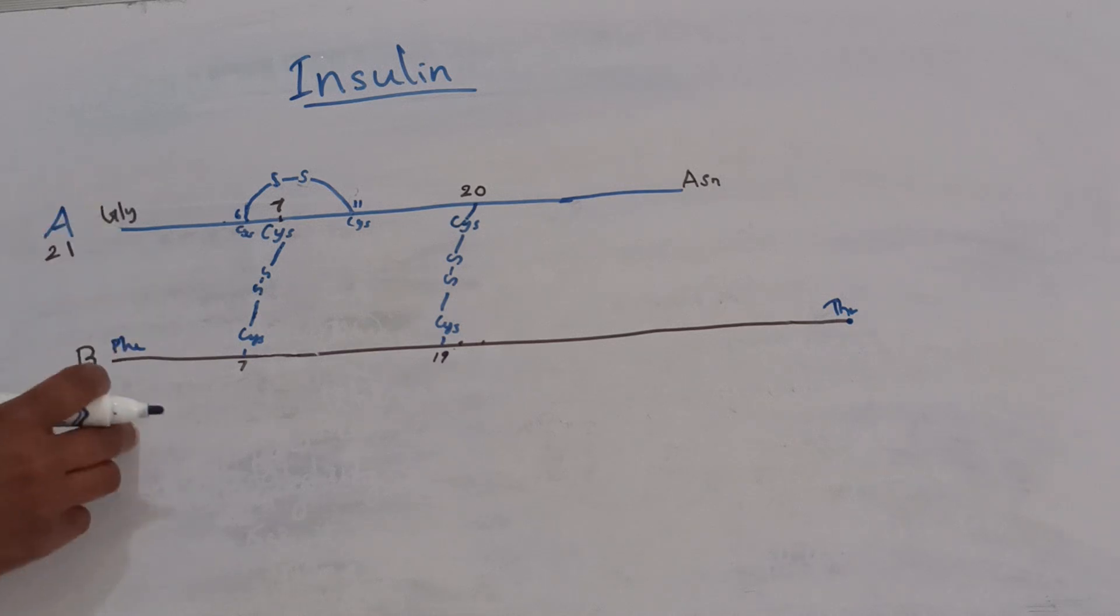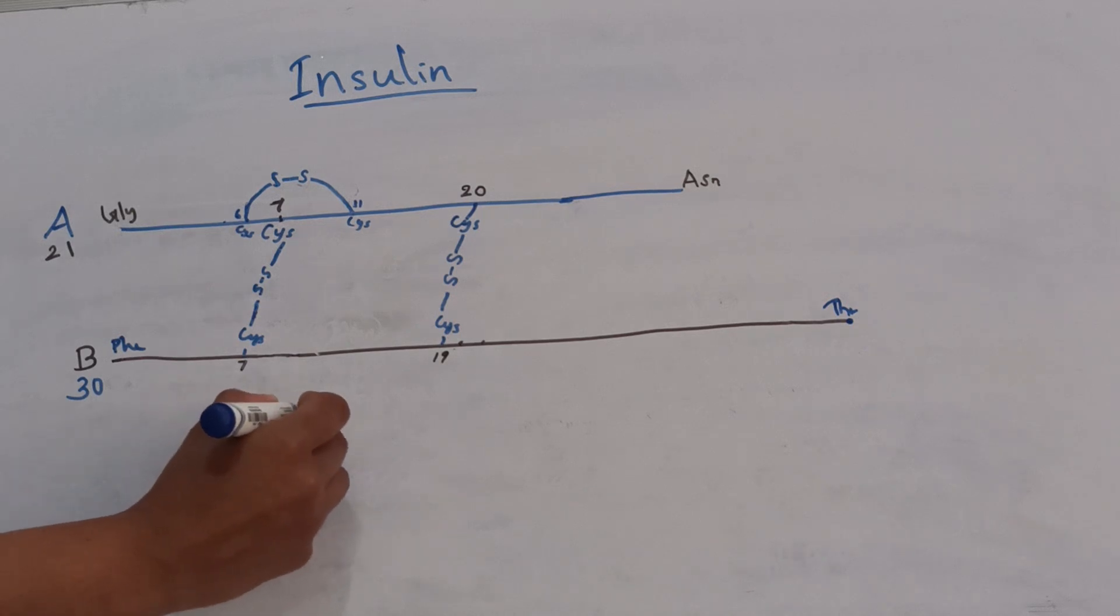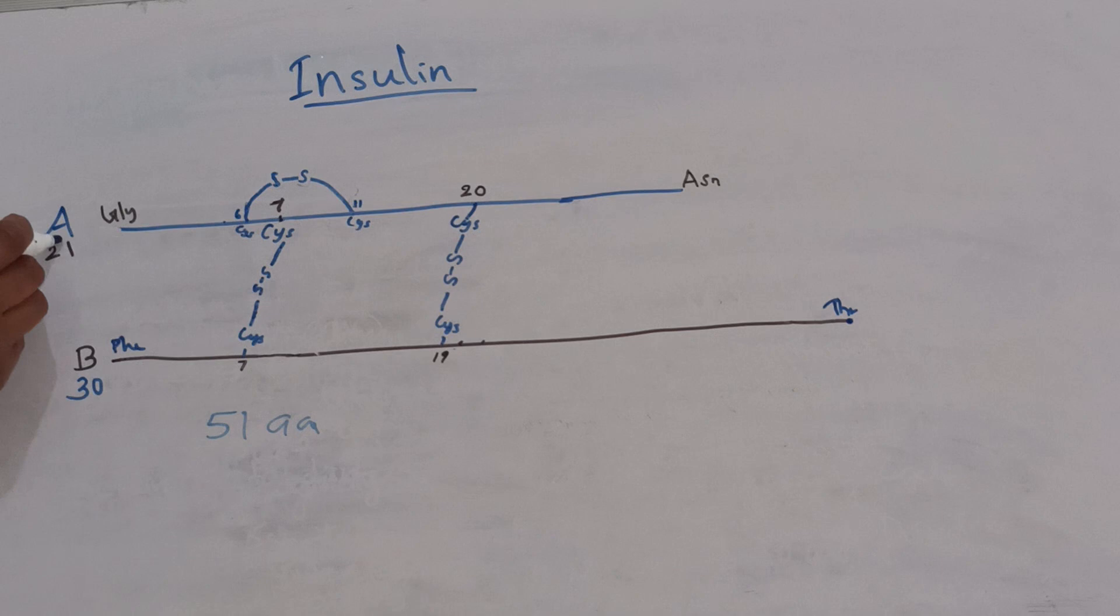It is composed of two polypeptide chains, A chain and B chain, containing a total of 51 amino acids. A chain contains 21 amino acids and B chain contains 30 amino acids.